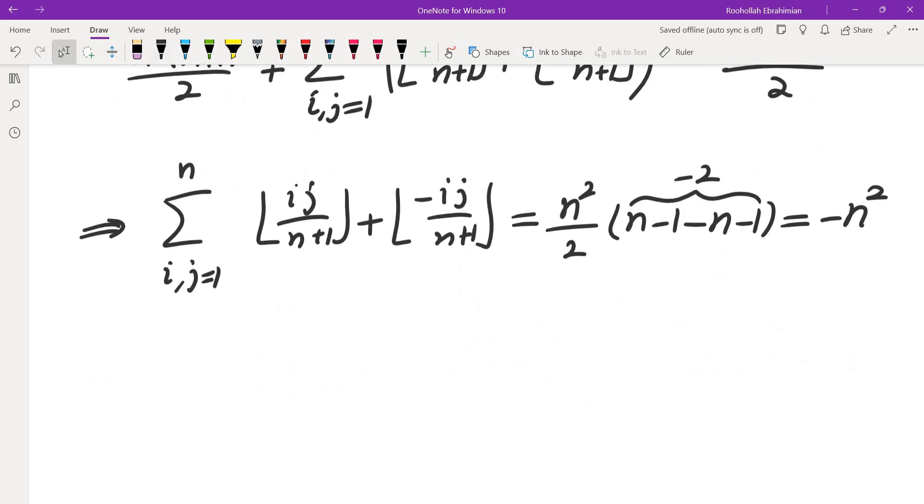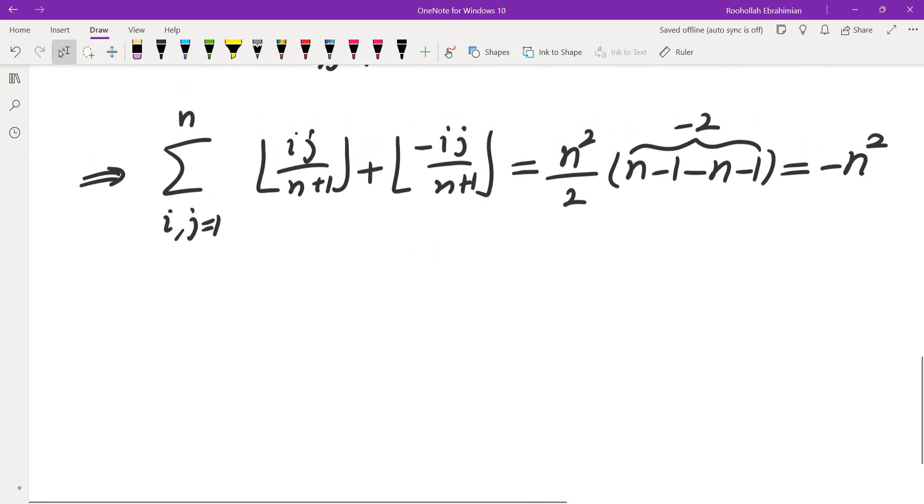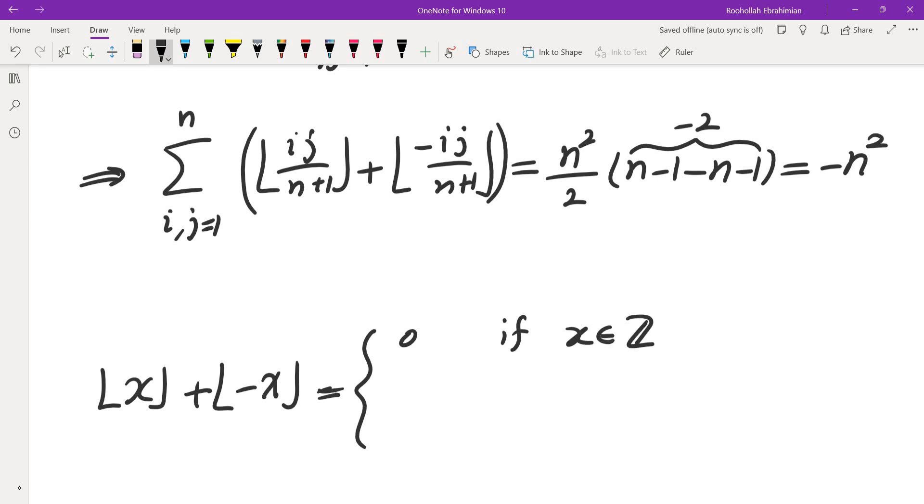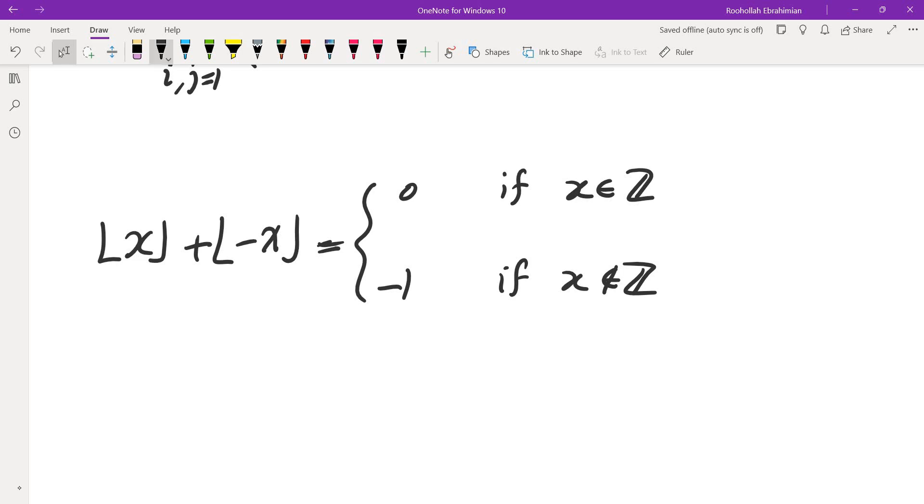Now, I'll have to understand floor of ij over n plus 1, plus floor of negative ij over n plus 1. That's not very difficult to see. In general, if you have floor of x plus floor of negative x, if x is an integer, this would be 0. If x is not an integer, this would be negative 1. And the reason is, if x is between two integers, n and n plus 1, then negative x would be between negative n minus 1 and negative n. Floor of this one is n, floor of this one is negative n minus 1, so the sum is negative 1.